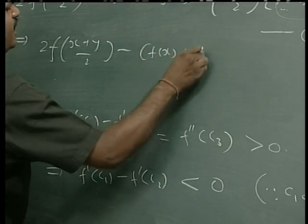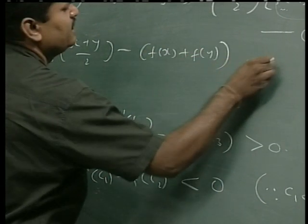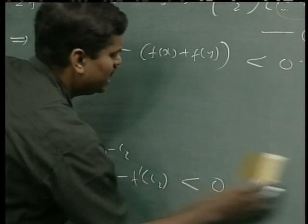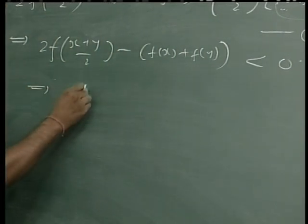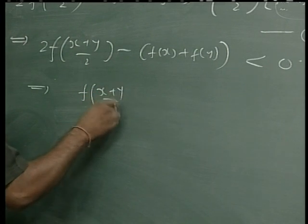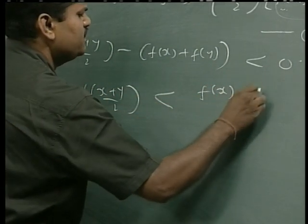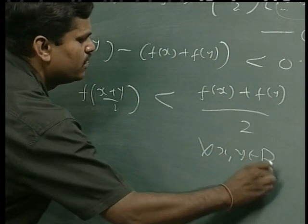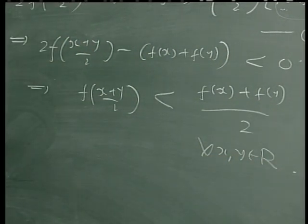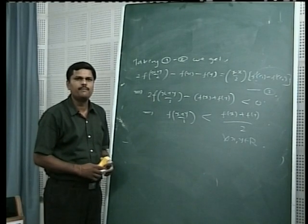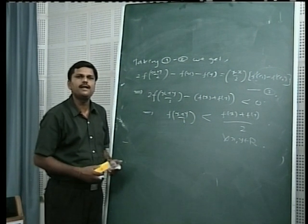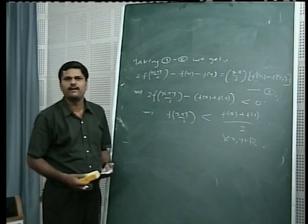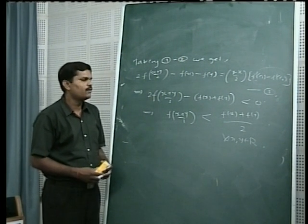From equation three, since f'(c₁) minus f'(c₂) is negative, we get 2f((x+y)/2) minus f(x) minus f(y) is less than zero, which proves that f((x+y)/2) < (f(x) + f(y))/2. Since x and y are arbitrary, this is true for every x, y in ℝ. So we have obtained this interesting result using Lagrange's Mean Value Theorem. I discussed some five or six interesting problems based on Rolle's theorem and Lagrange's mean value theorem.